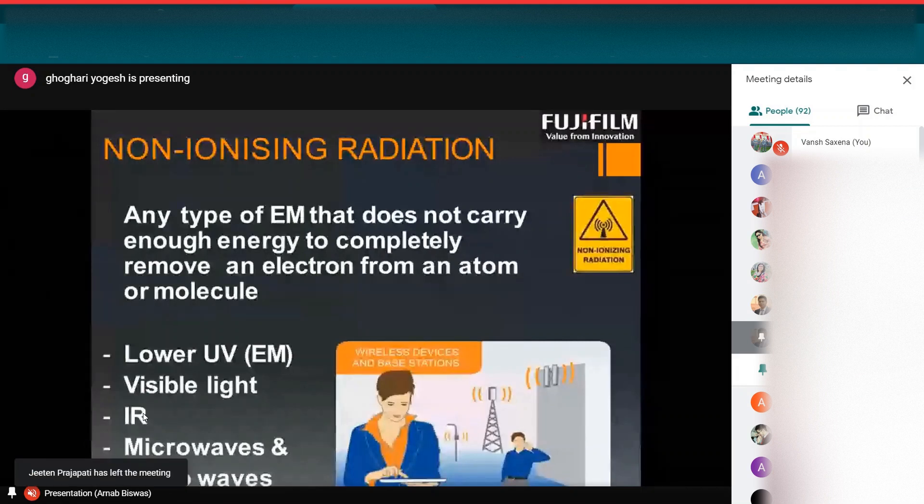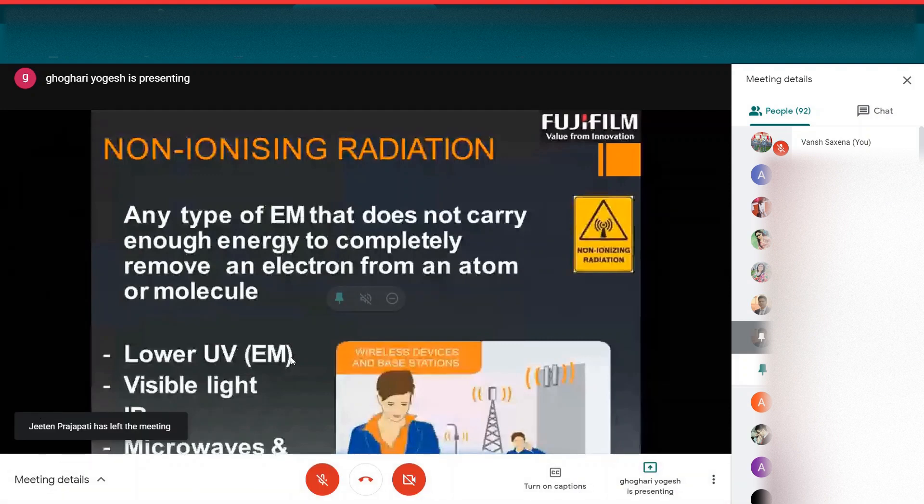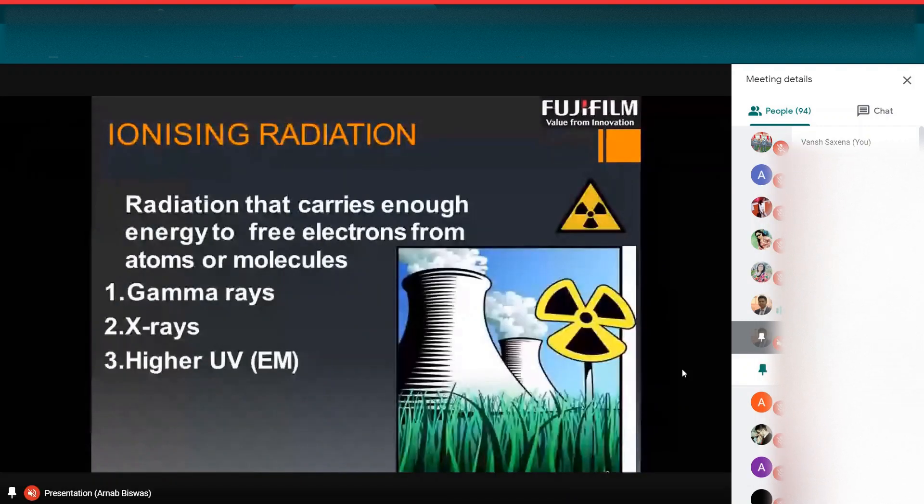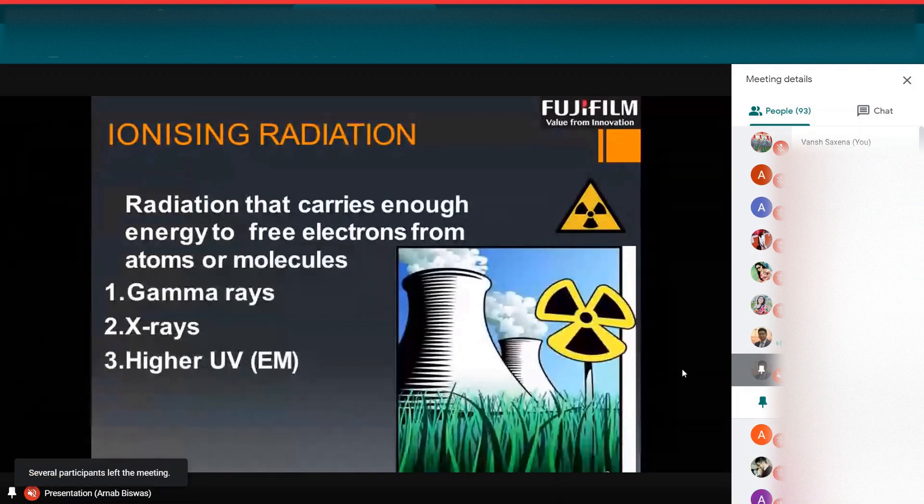What is ionizing radiation? The radiation that carries enough energy to free electrons from atoms or molecules. This is the radiation which we should care about. This is very harmful for our body tissue as it has higher energy which can free electrons from atoms or molecules. The examples of ionizing radiations are gamma rays, X-rays, higher ultraviolet rays, etc.